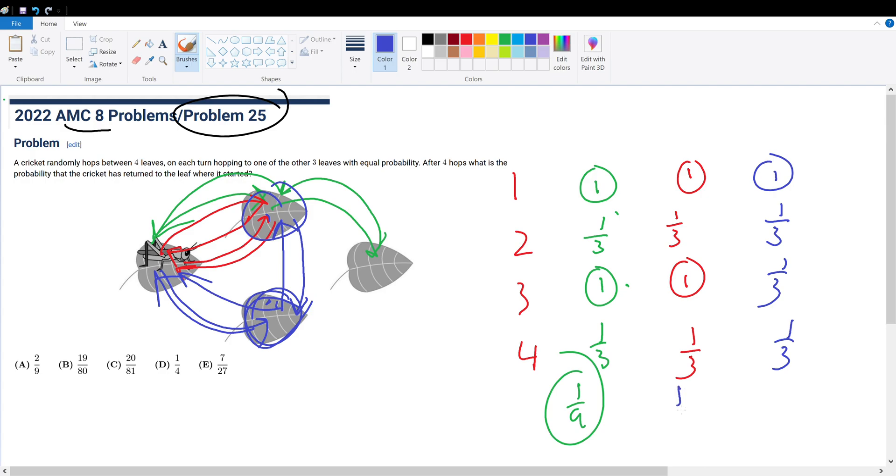So this is one-ninth in total. And this is one-twenty-seventh. So the answer is two-ninths plus one-twenty-seventh, which is seven over twenty-seven. Or answer e. So the question isn't really that bad when you think through it.